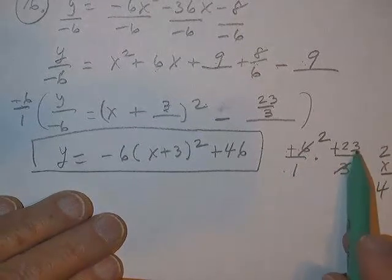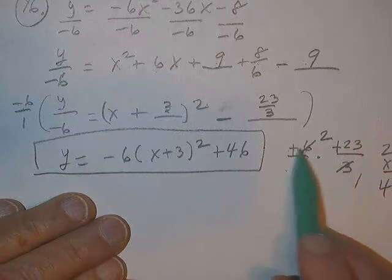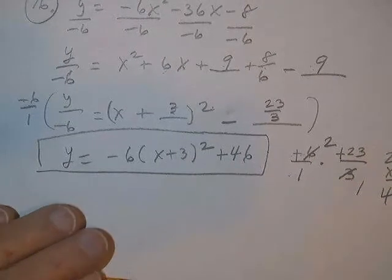So I took negative 6 over 1 and negative 23 over 3 right here and divided those. And then doubled this to get to 46.